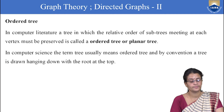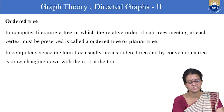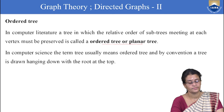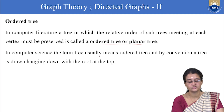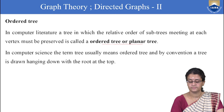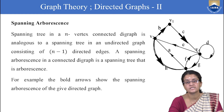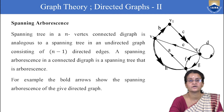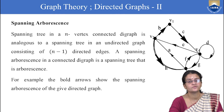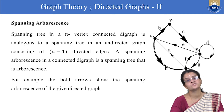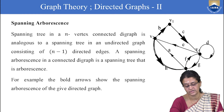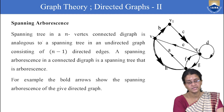Now we will see what is an ordered tree. In computer literature, a tree in which the relative order of subtrees meeting at each vertex must be preserved is called an ordered tree or a planar tree. In computer science, the term tree usually means ordered tree. By convention, a tree hangs down from the root at the top.